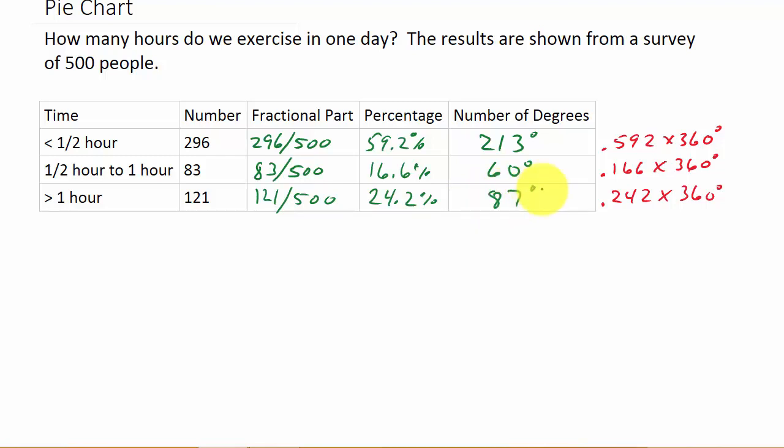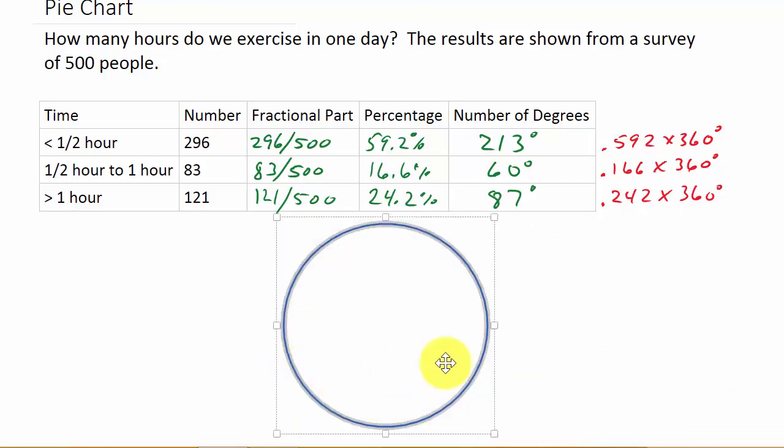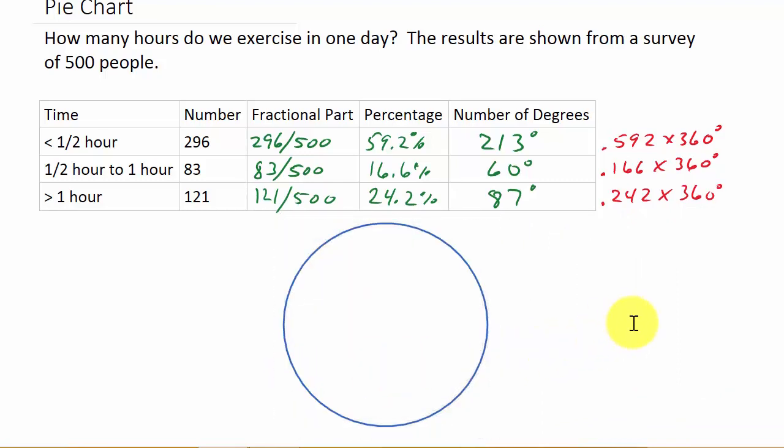So now we have our degrees, now we're ready to draw our pie chart. We need a circle, and I've already had one done here, so let's move it over here. First thing, I'm just going to draw me a line from the center out to the circle, so I'll have a starting point. Let's look at this from the center, and I'm going to just draw it straight across.